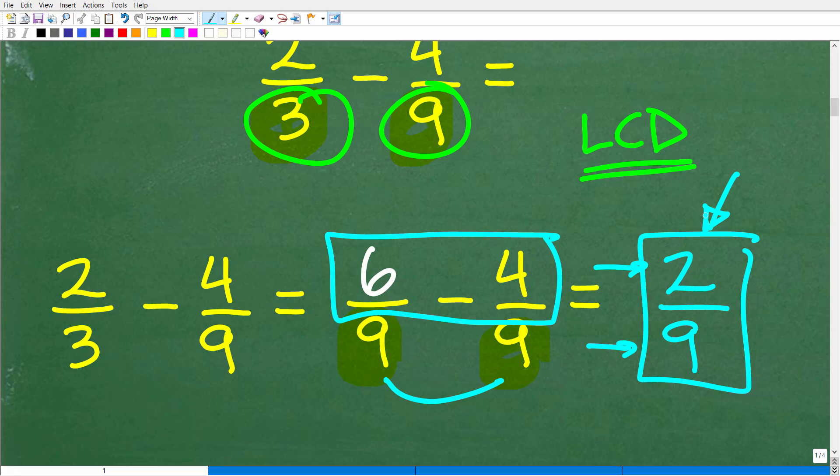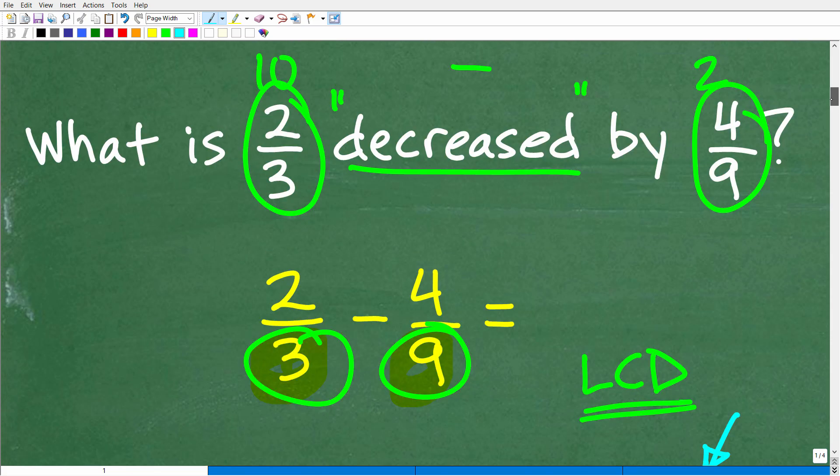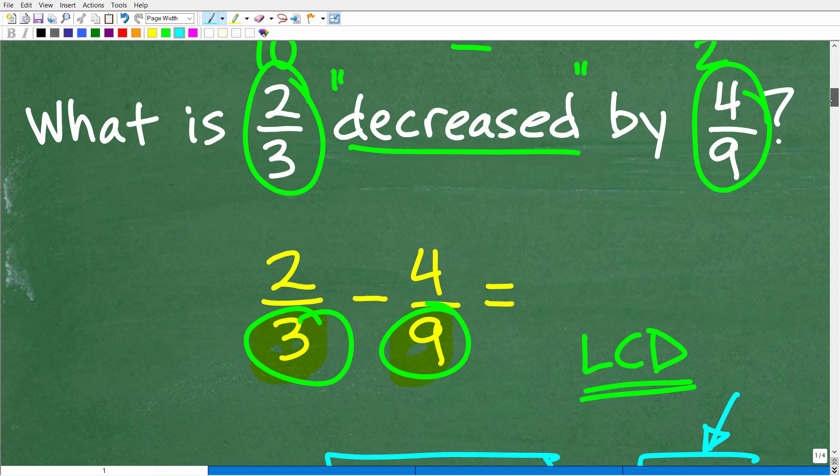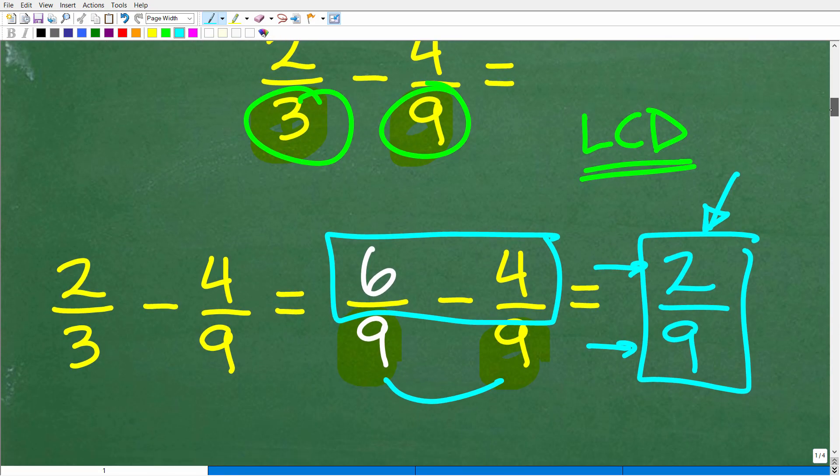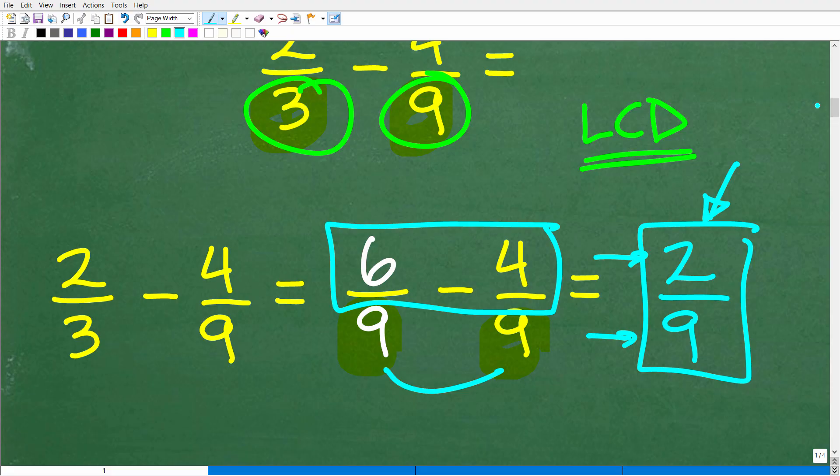And we always look for opportunity to simplify or reduce our fractions here. And we cannot. So that is the answer, two ninths. So again, going back to the original question, what is two thirds decreased by four ninths? The answer is two ninths. So again, pretty simple, straightforward problem.